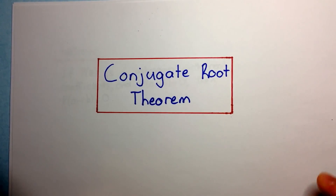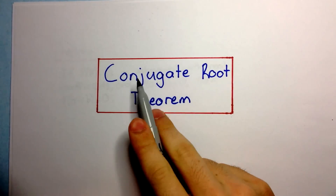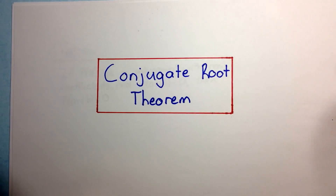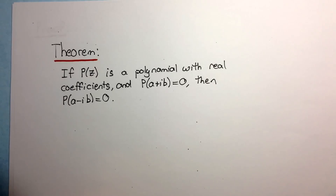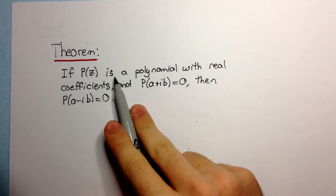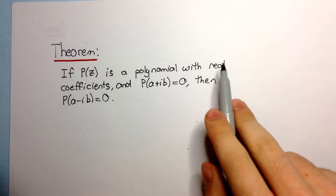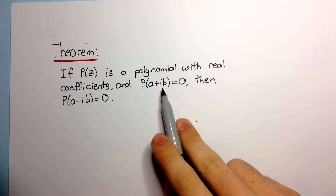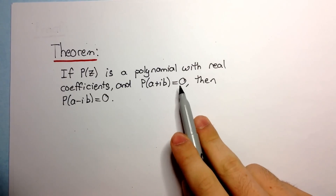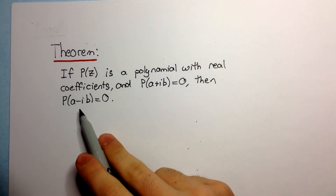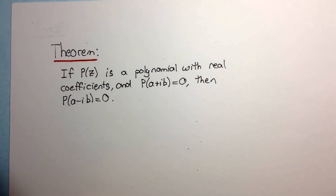Welcome to today's video everyone. Today we're going to be talking about the conjugate root theorem. What does the theorem say? The theorem says if P of Z is a polynomial with real coefficients and P of A plus iB is equal to zero, then P of A minus iB is equal to zero.